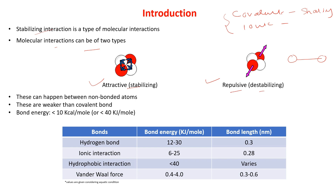If two atoms are bonded by a covalent bond, each atom can be part of a molecule. For example, molecule one contains three atoms and molecule two also contains three atoms. A covalent bond binds these two molecules. Any interaction that happens between these two molecules is mainly due to stabilizing interactions — not a covalent bond interaction. Stabilizing interactions mainly happen between two non-bonded atoms, and they help to stabilize the three-dimensional structure of a molecule.